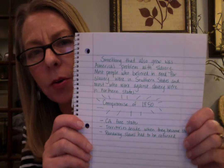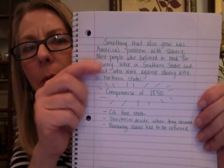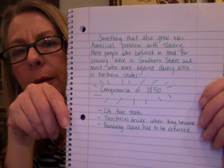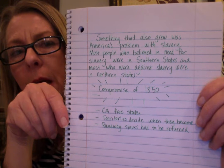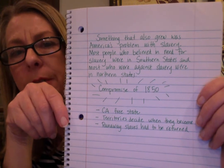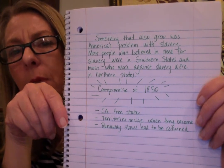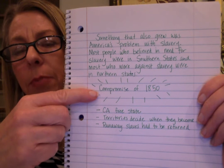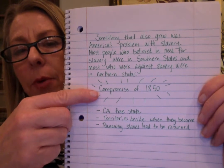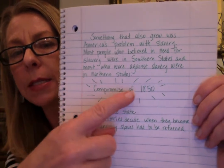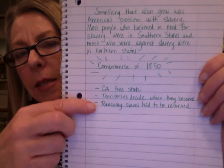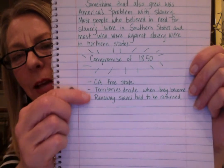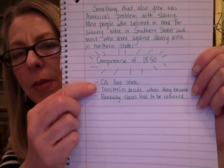Not only was the United States growing, but the problem with slavery was growing too. Most people who believed in the need for slavery were in the southern states, and most who were against slavery were in the northern states. Here is the plan that some of the senators came up with — it was called the Compromise of 1850 — and it did several different things. There were actually five different bills that the House of Representatives and the Senate had to vote on, but these are some of the key issues.